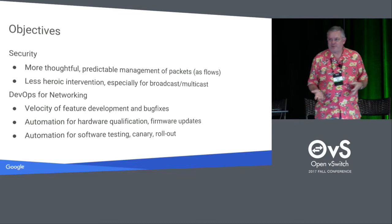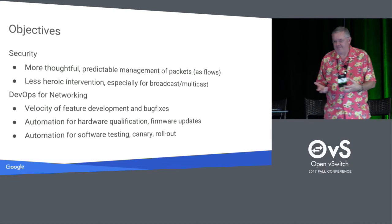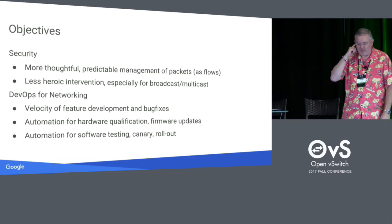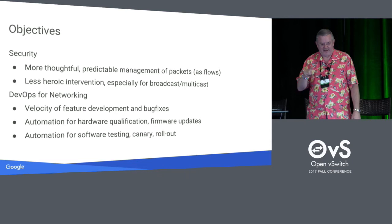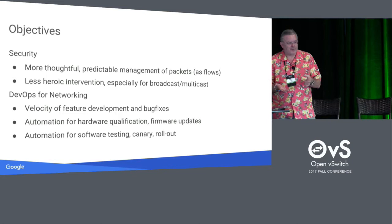Our objective then was more thoughtful, predictable management of flows. We wanted to actually understand what happens in an enterprise network and how we use principles of software-defined networking to control things — to implement reachability domains and access control. We wanted less heroic intervention. This notion of how does DevOps apply to networking: we want velocity of feature development and bug fixes.